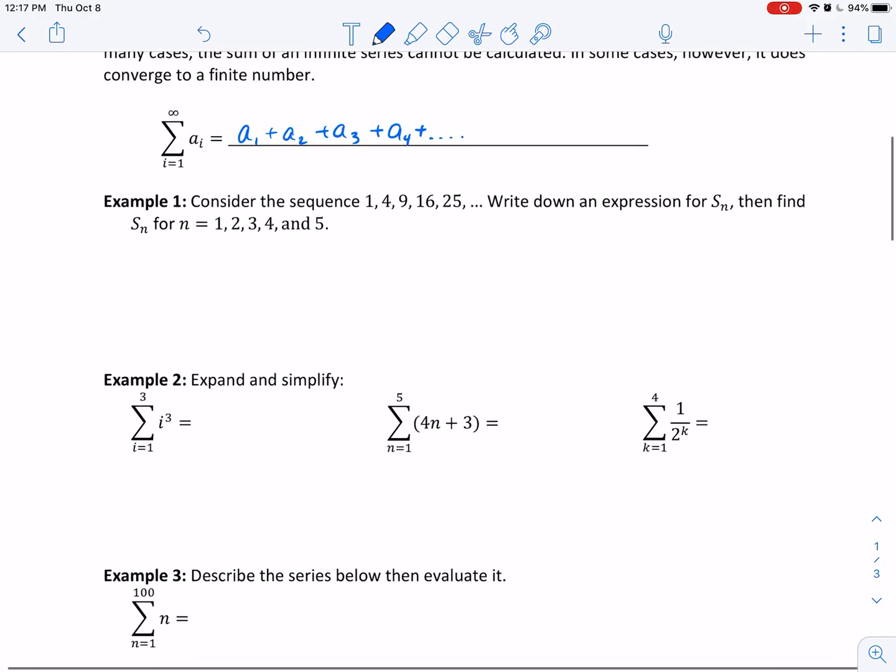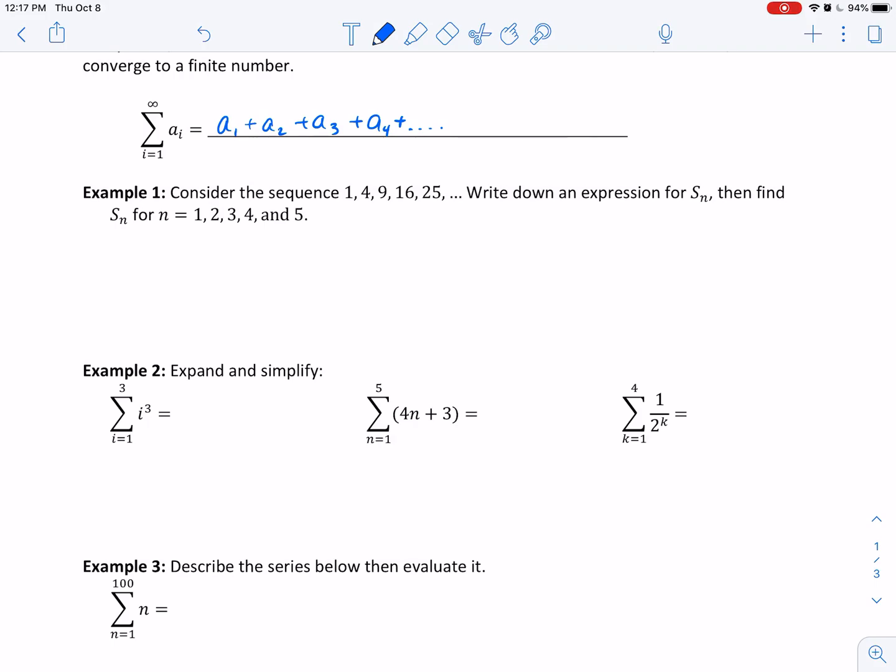Consider the sequence 1, 4, 9, 16, 25. Hopefully you recognize those are perfect squares. This sequence can be written as n squared. So we could say a_n is equal to n squared.